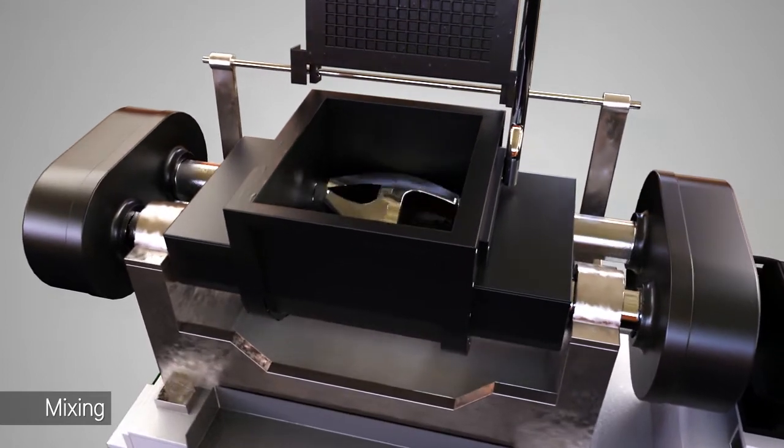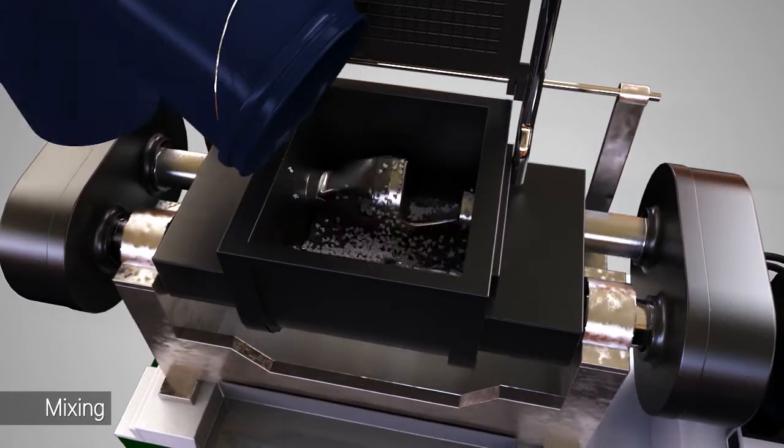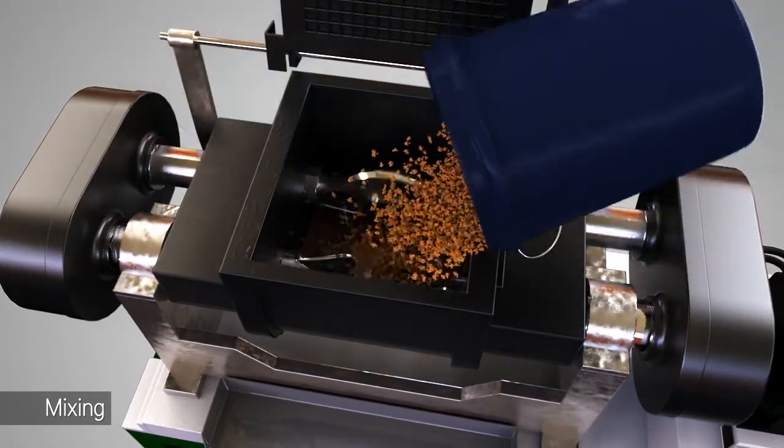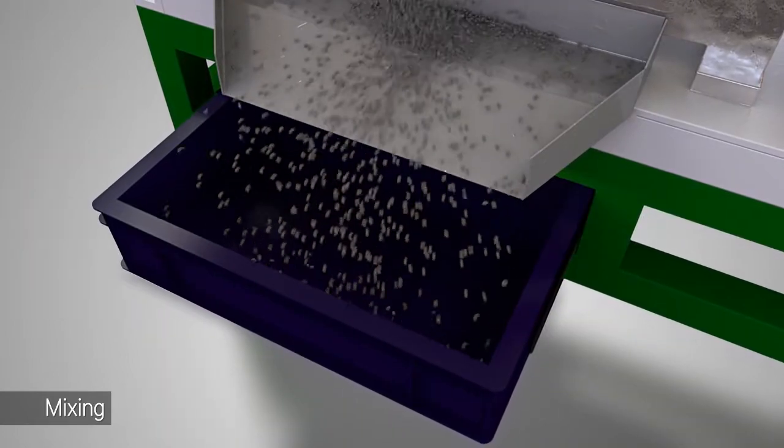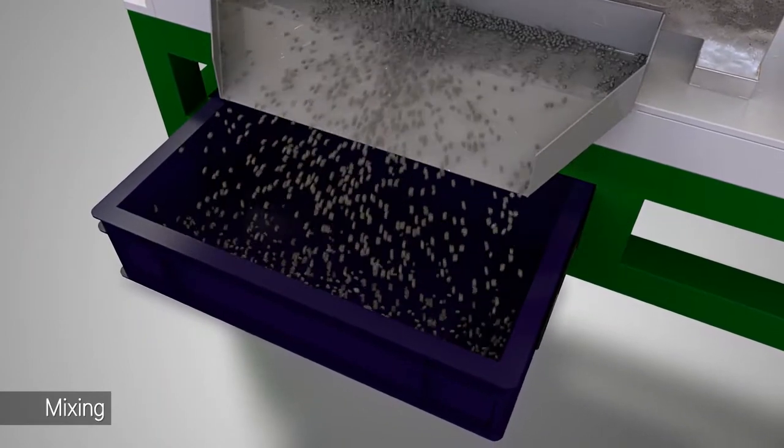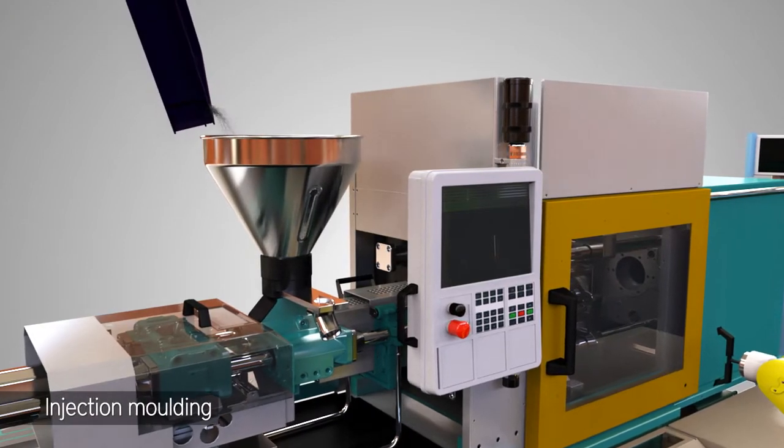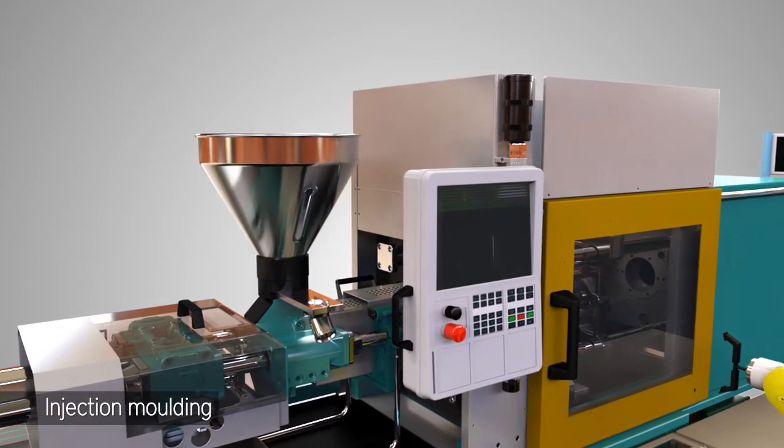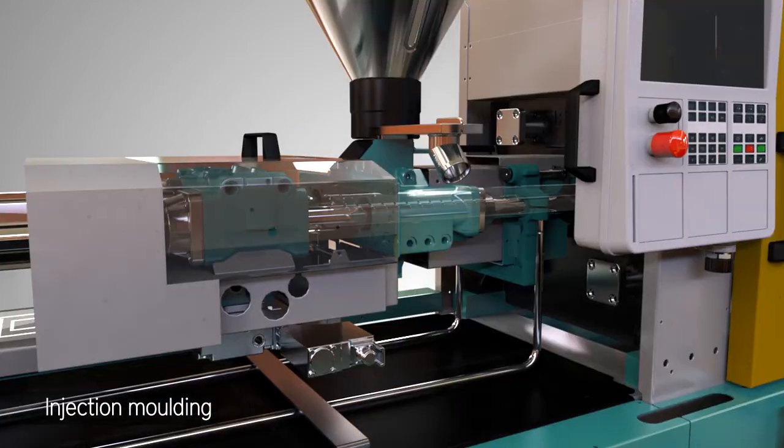Denkom MIM creates a unique feedstock by combining powdered metal, wax and polymers. This mix is poured into the metal injection molding machine where it gets heated to a point where the binding materials liquefy.